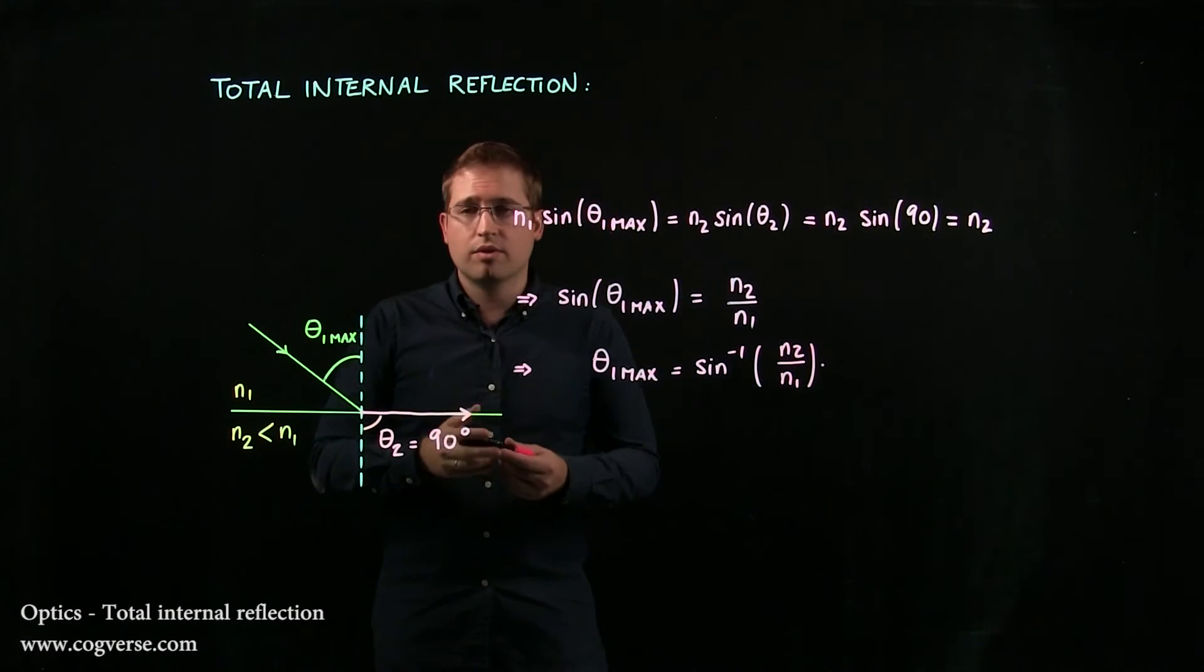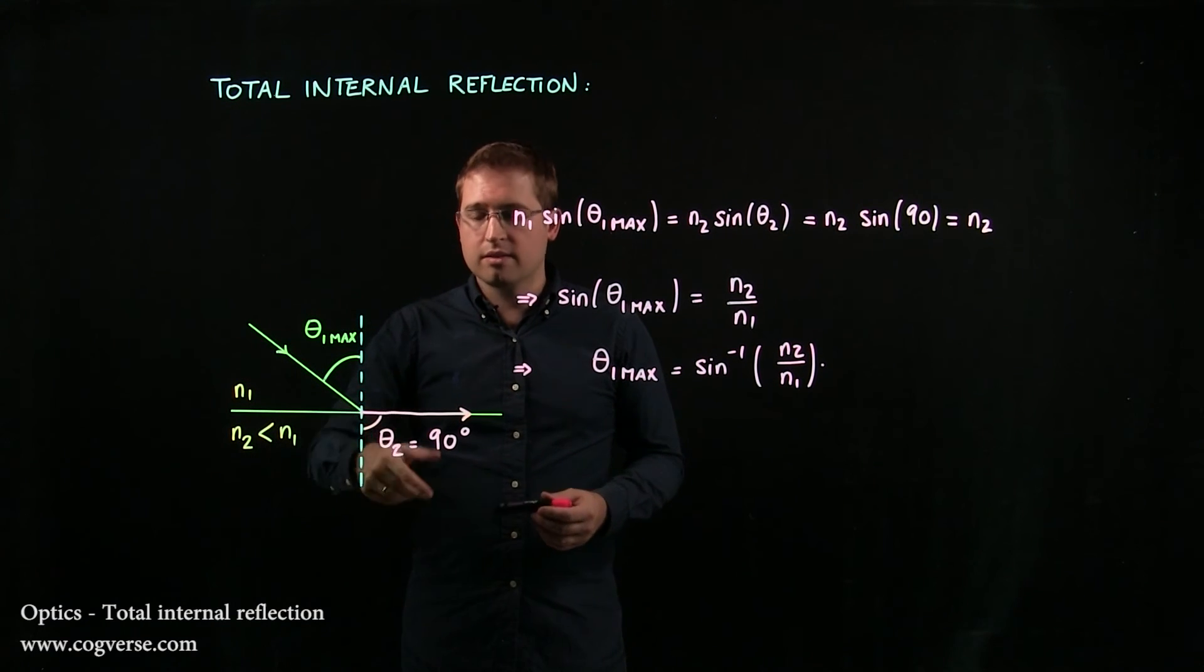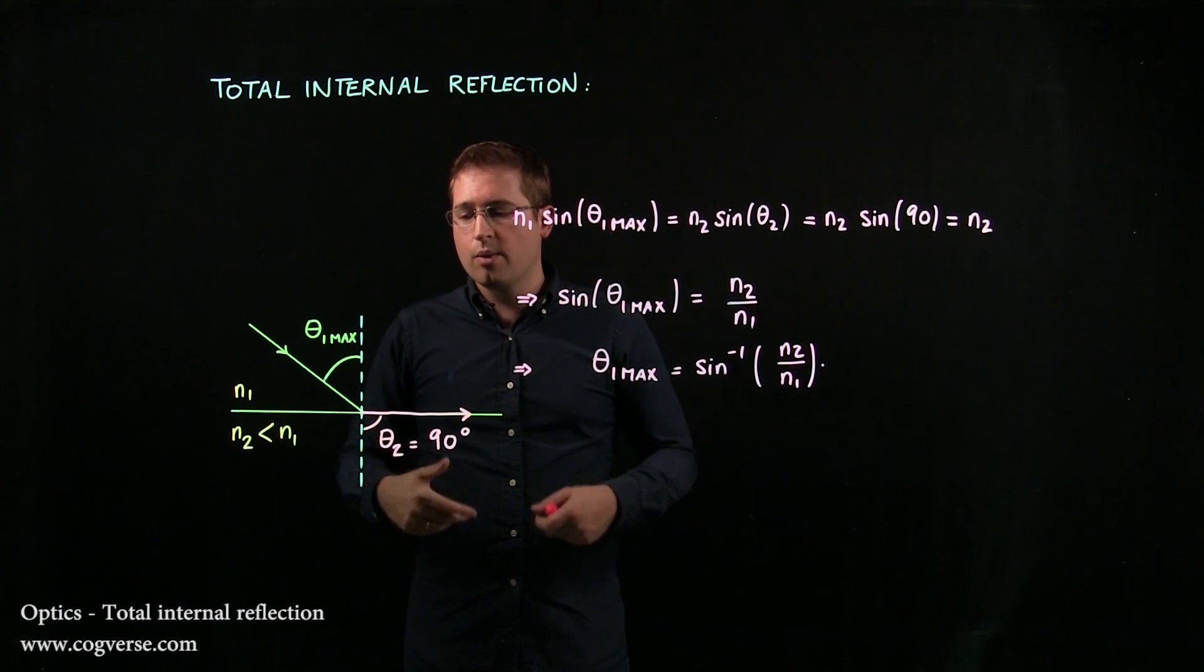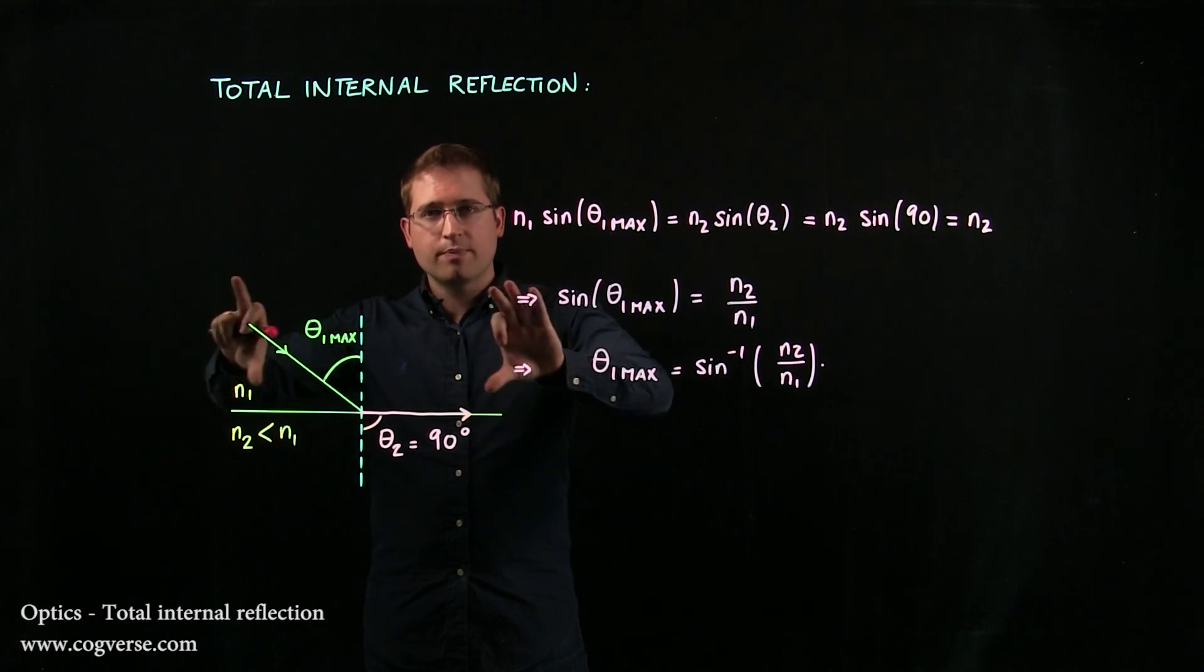And any angle greater than theta 1 max will not produce a refracted ray. The light that hits at a greater angle than this will be totally reflected off the surface and will be trapped in this medium.